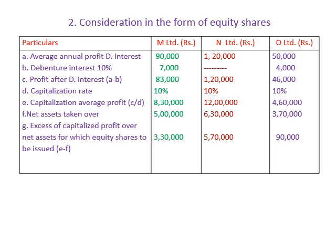For N Limited: capitalized profit is 12,00,000; net assets are 6,30,000; excess of capitalized profit is 5,70,000. For O Limited: capitalized profit is 90,000 — wait, it is confirmed as 90,000 — and equity shares are to be issued accordingly for M, N and O. The two tables clearly explain the value of debentures and equity shares to be issued for M, N and O.